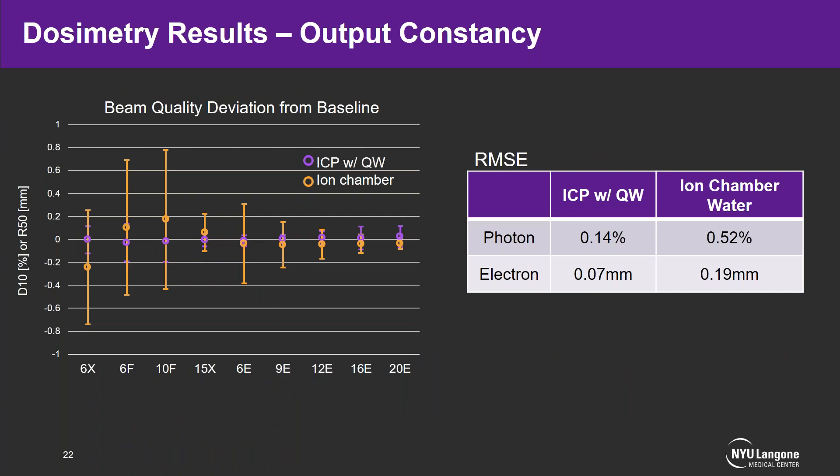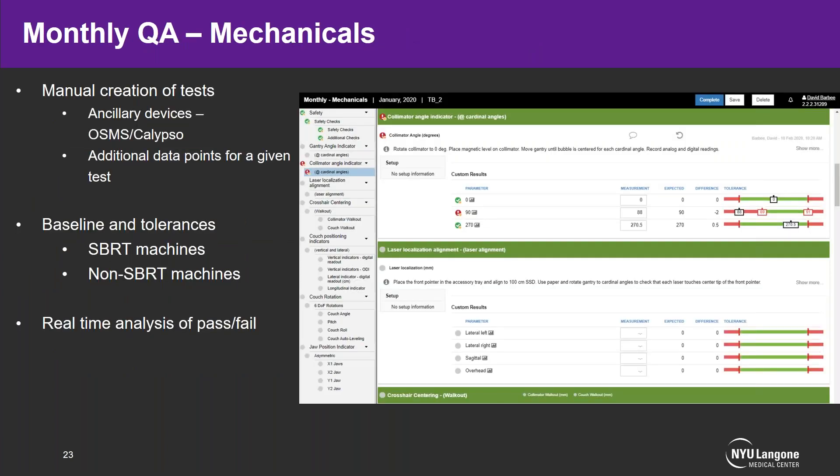We also looked at energy output constancy, examining D10 percentage change or R50 depth change across all machines and energies. The IC Profiler and quad wedge were much tighter than the ion chamber in water, and the repeated root mean squared error calculation again confirmed that the IC Profiler and quad wedge were significantly lower than ion chamber in water.